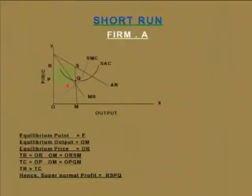In the short run, a firm under monopolistic competition can earn supernormal profits, normal profits, or may incur a loss. Efficient firms earn supernormal profits, average firms earn normal profits, and inefficient firms may incur loss. These three outcomes are explained by three different diagrams. In the first diagram, firm A is earning supernormal profits. On the OX axis we measure output, and the OY axis indicates price, revenue, and cost.